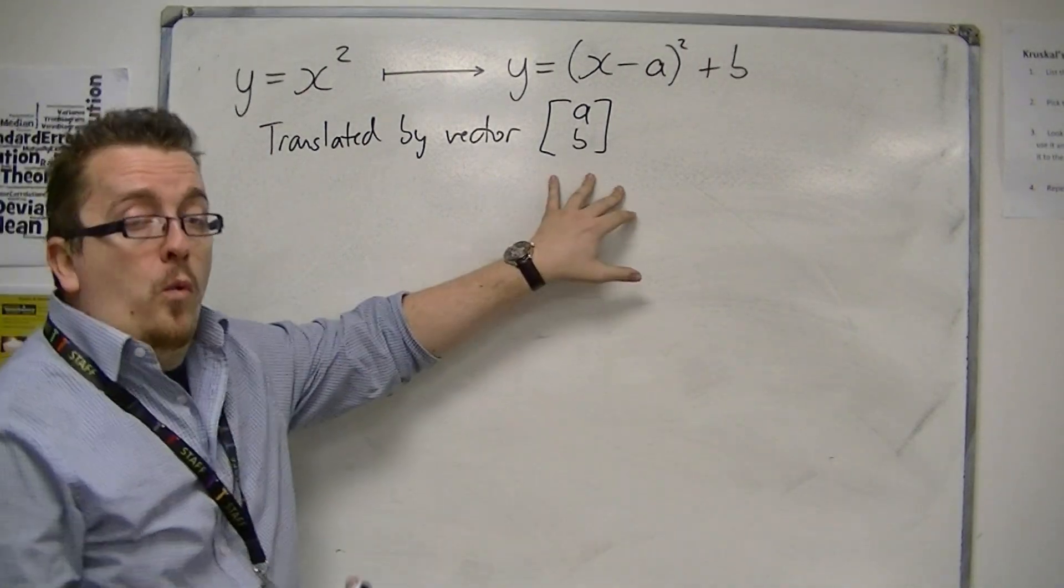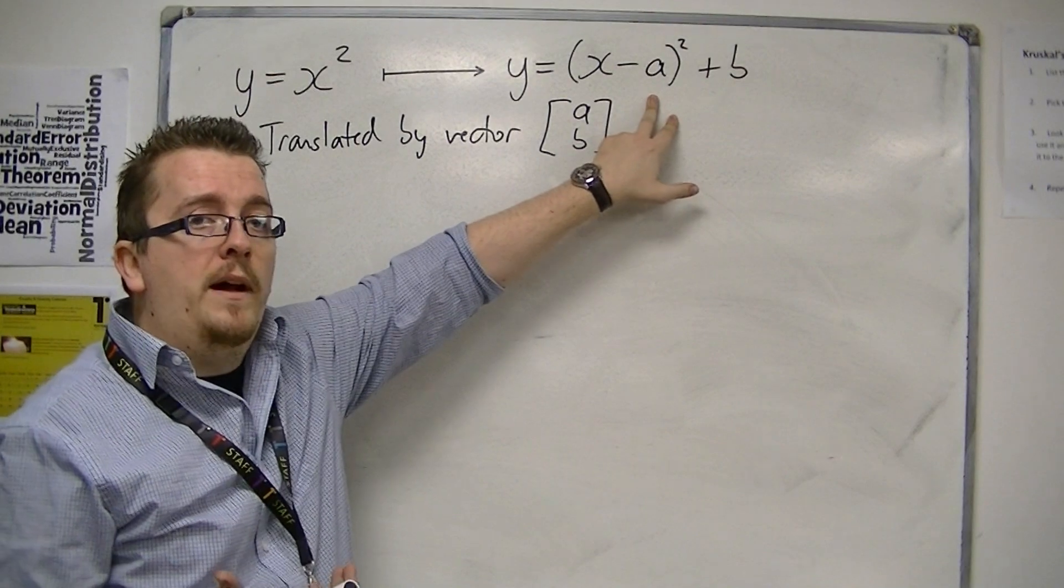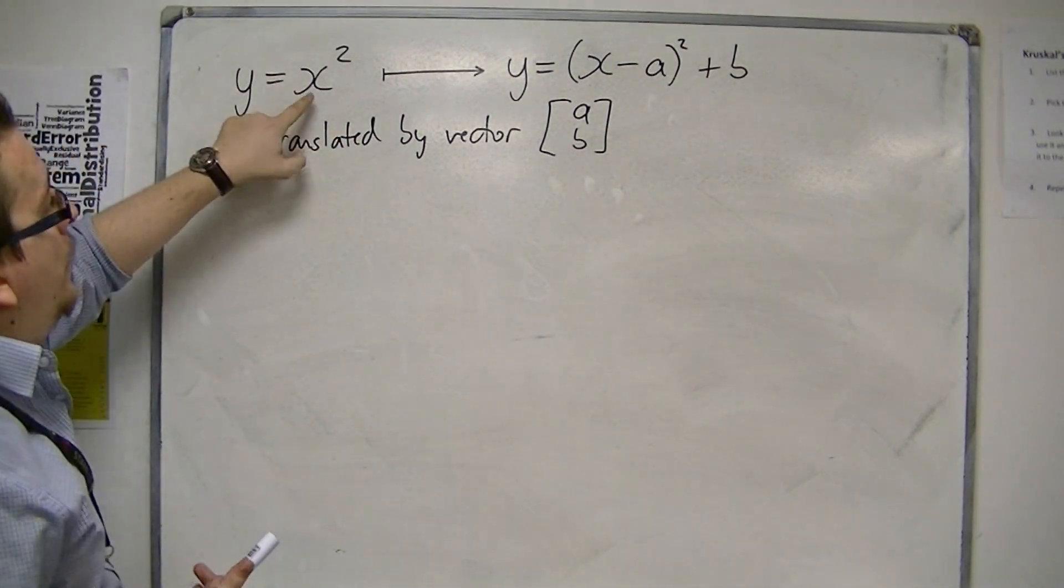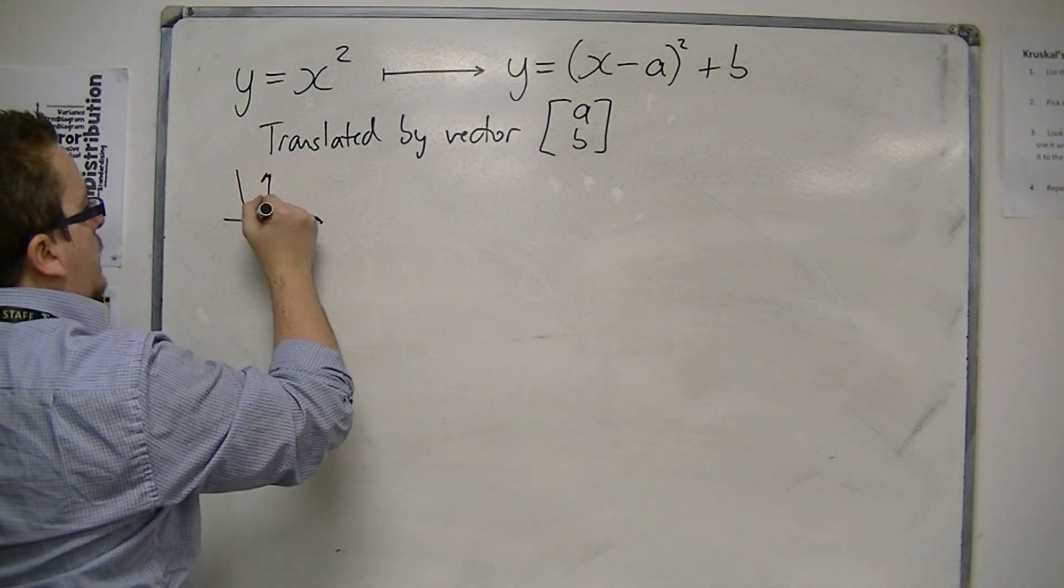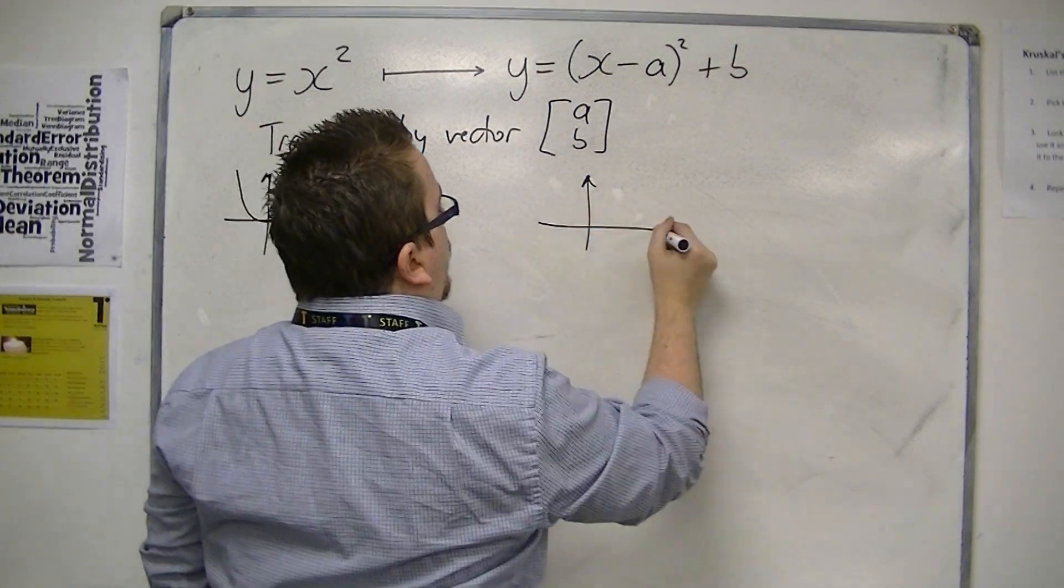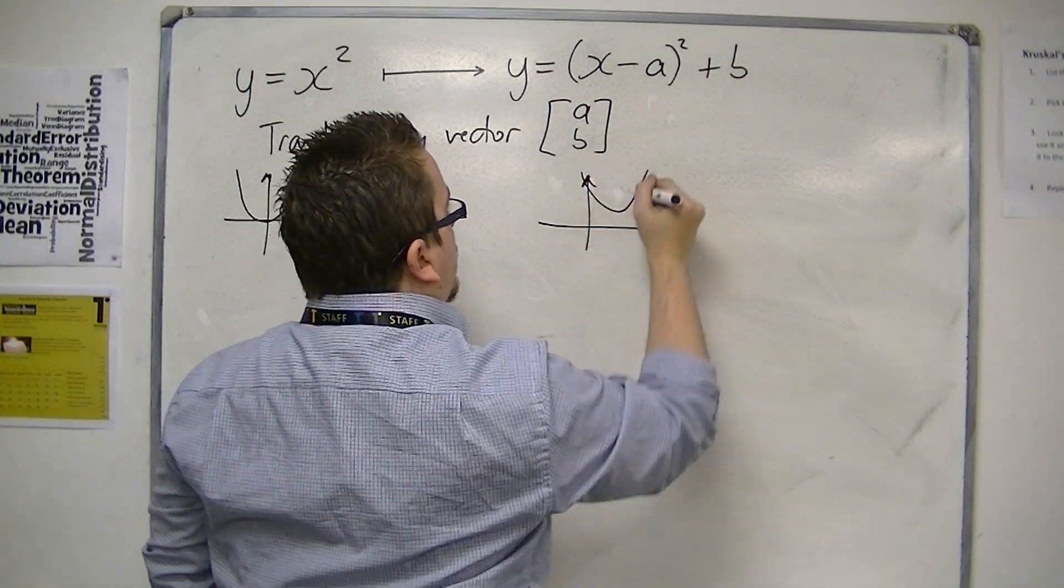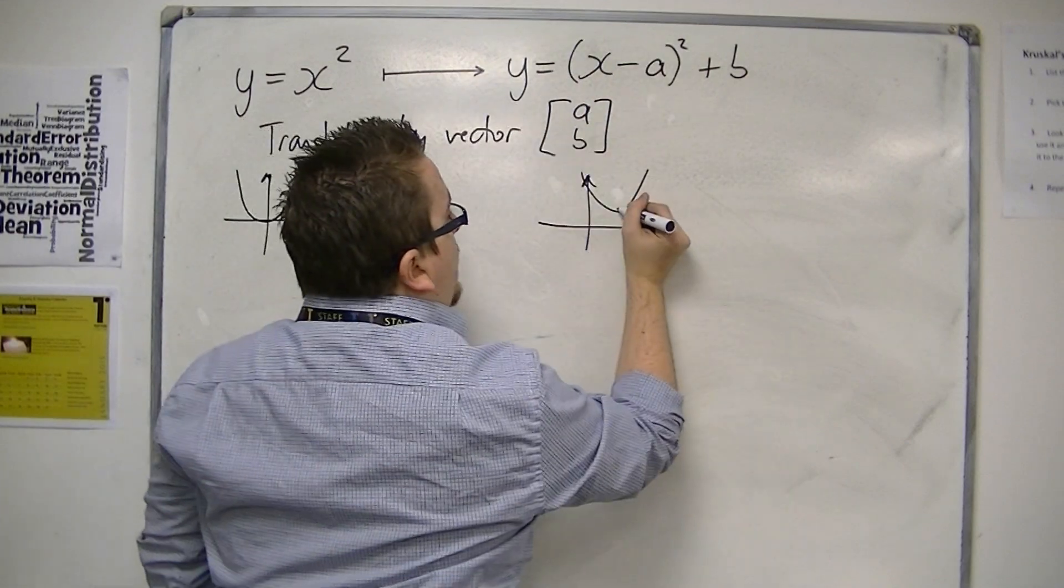So how that worked is because you were putting it into completed square format. The vertex of y equals x squared is the origin, but the vertex for this equation is at (a, b).